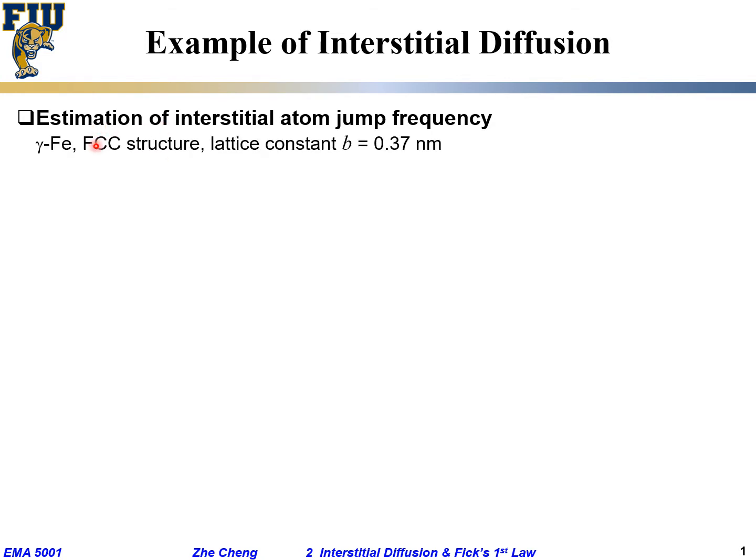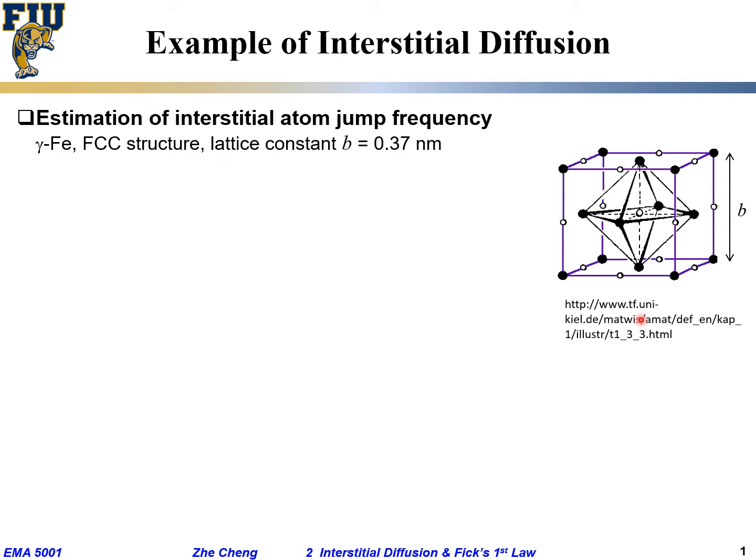We are looking at what type of iron? γ-Fe, FCC structure, with lattice constant b = 0.37 nanometer or 3.7 angstrom. Do you see this? The black dots represent the atoms at the corner as well as the face center. This b is our lattice constant.